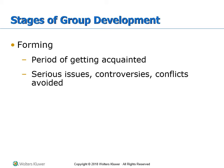The first stage of group development is forming — when the group first comes together. This is the period of getting acquainted, where serious issues, controversies, and conflicts are avoided. Everyone wants to make a good impression. You're trying to figure out roles: who's the loud one, who are the quiet ones. We're more reserved and not really being our full selves yet.